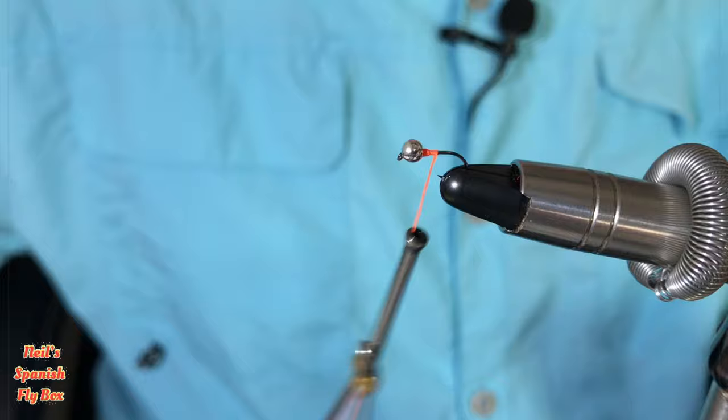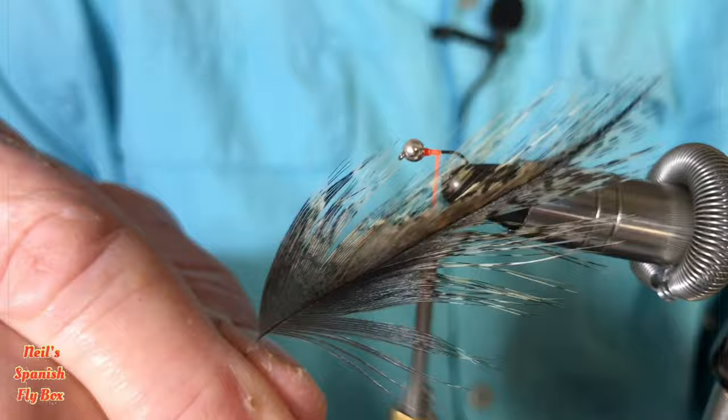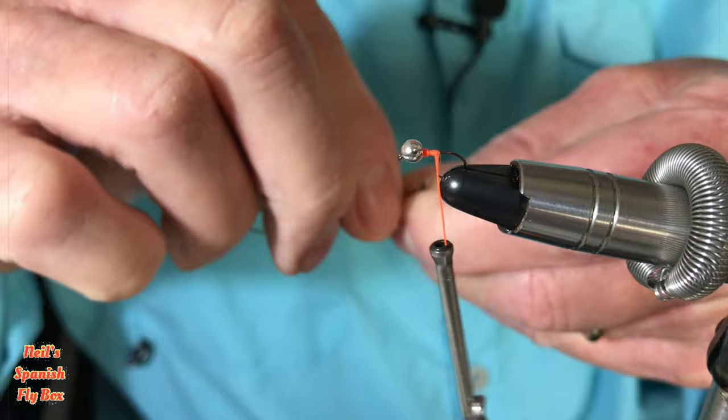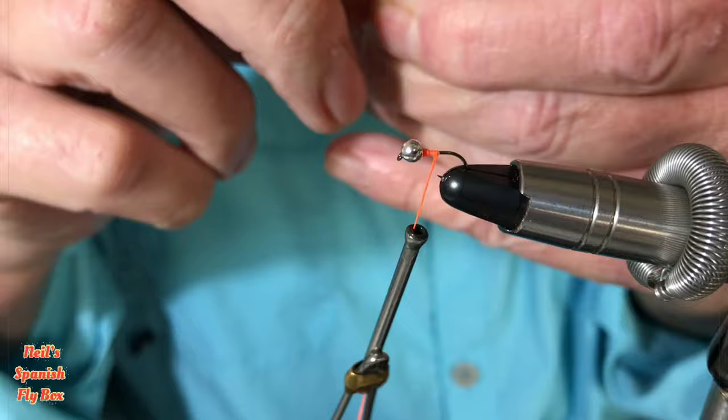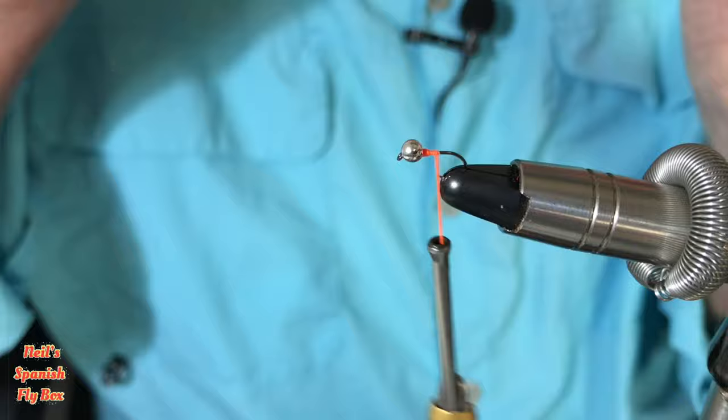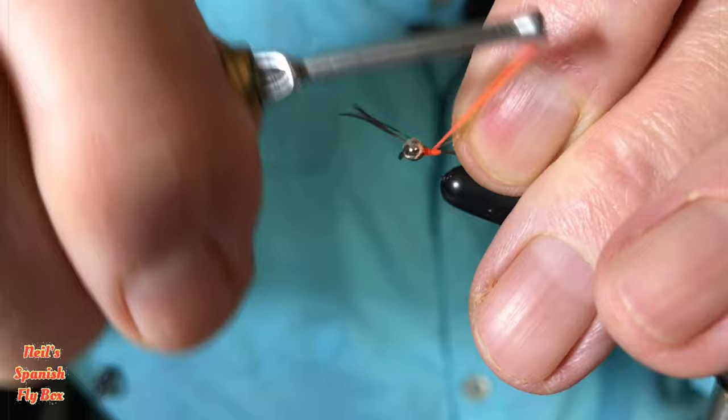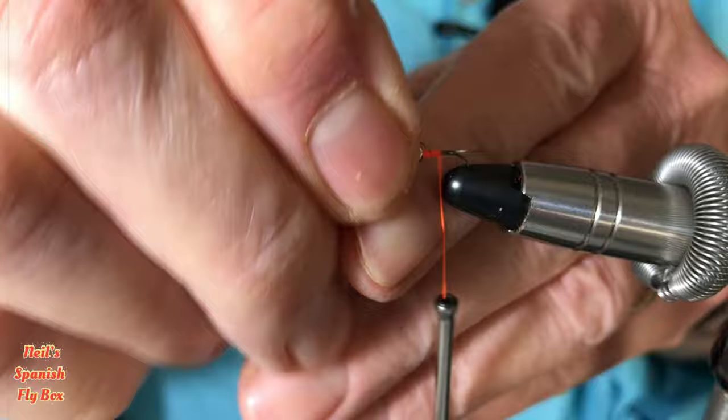I'm going to tie in the tail, and the tail is medium pardo coque de lion. The amount of fibers, five or six. You don't need that many. The size 16 is quite a small nymph in terms of perdigons. Let's just tie that in. You don't want the tail too long. That's about right.